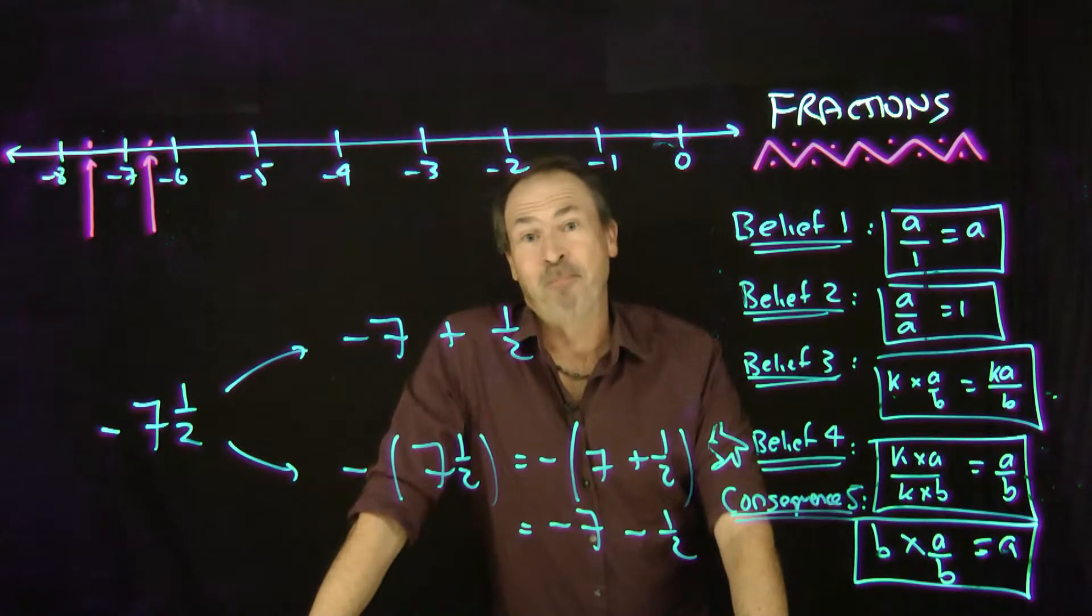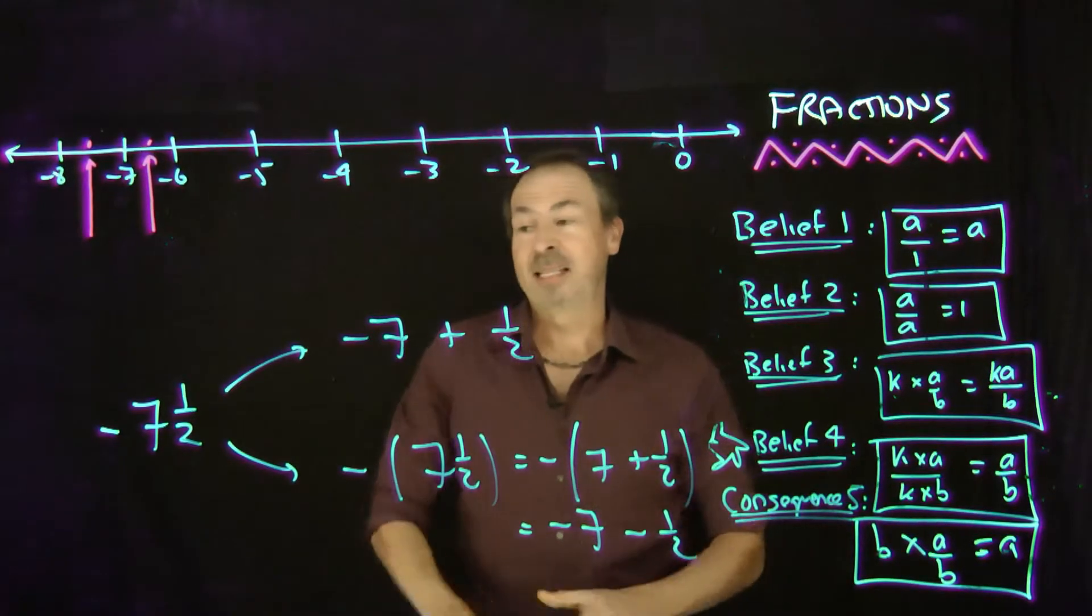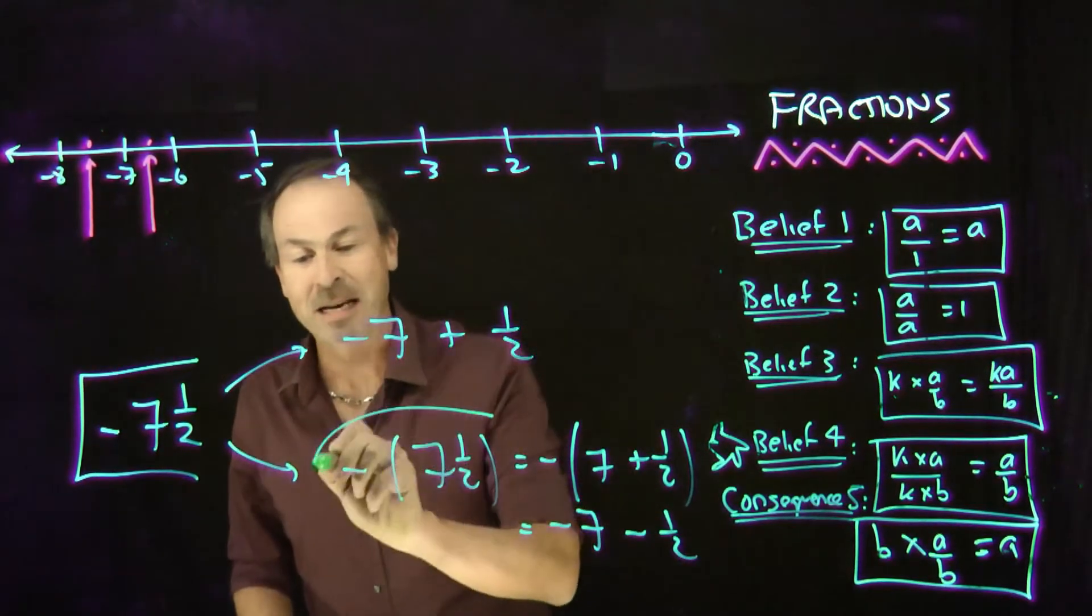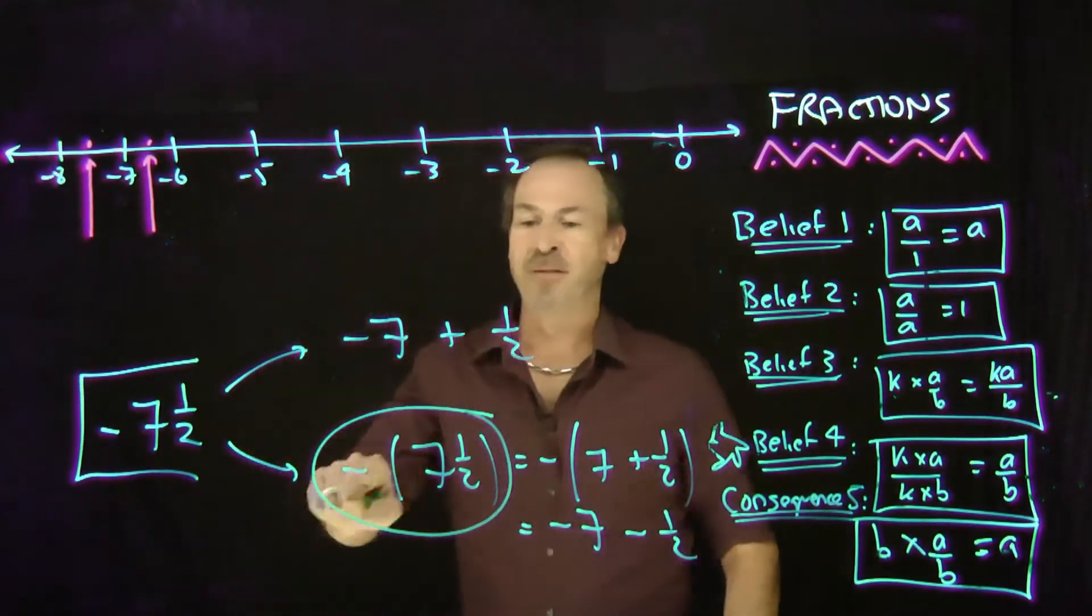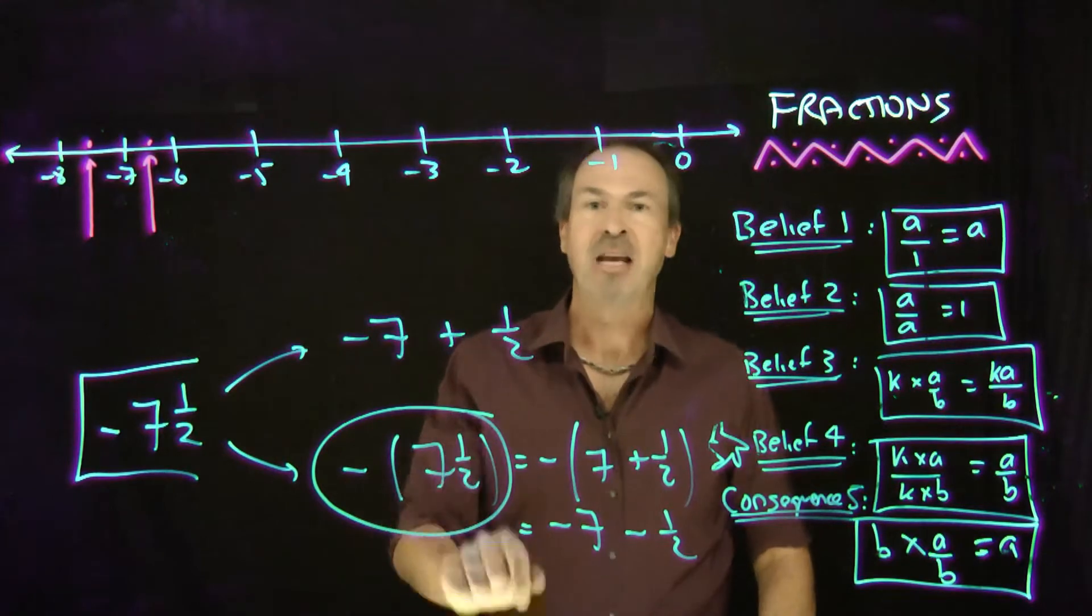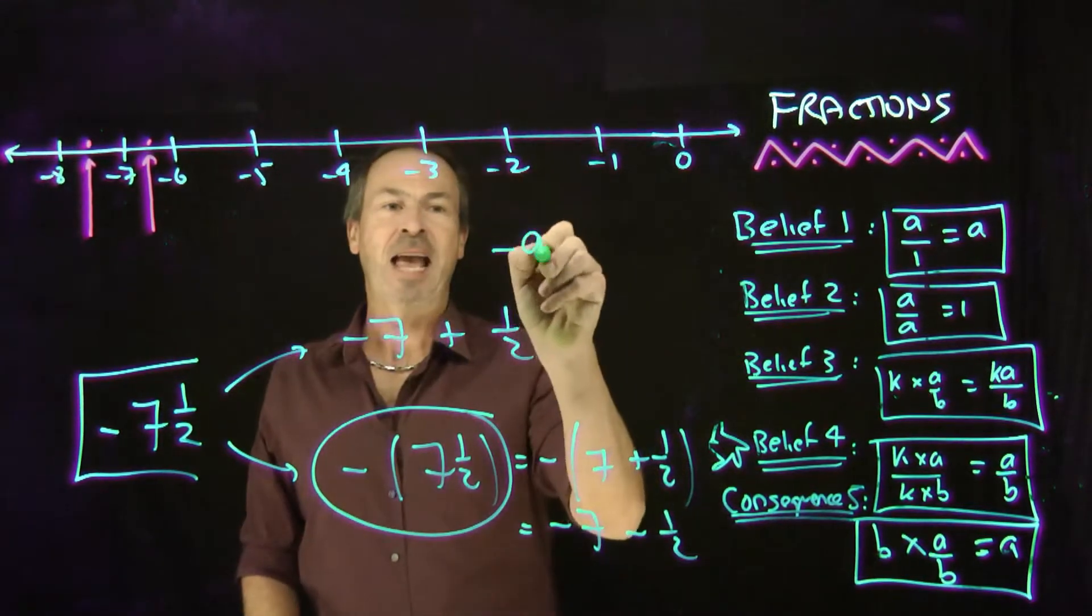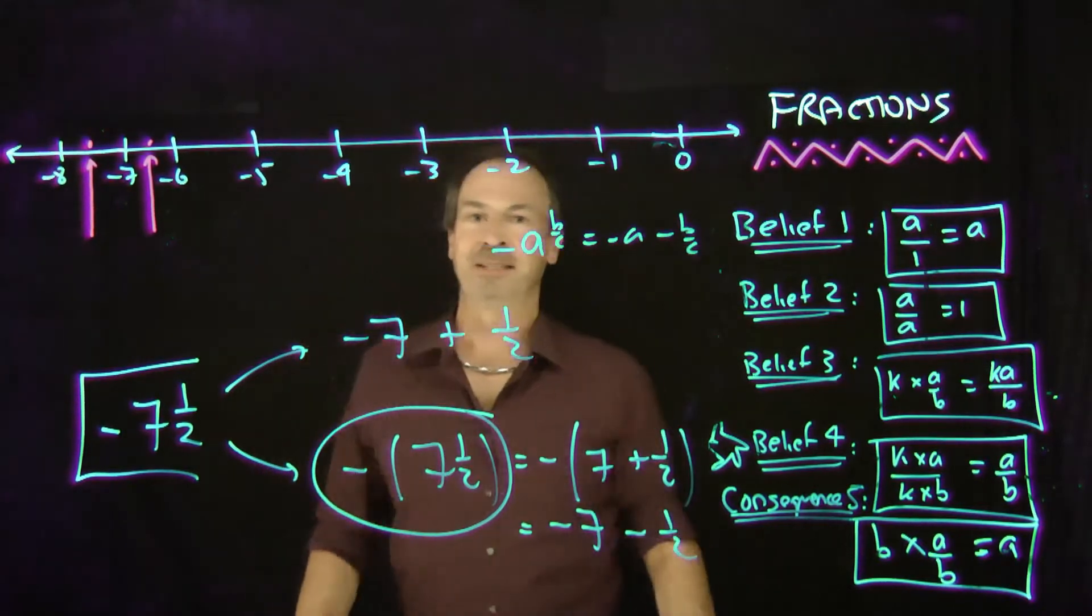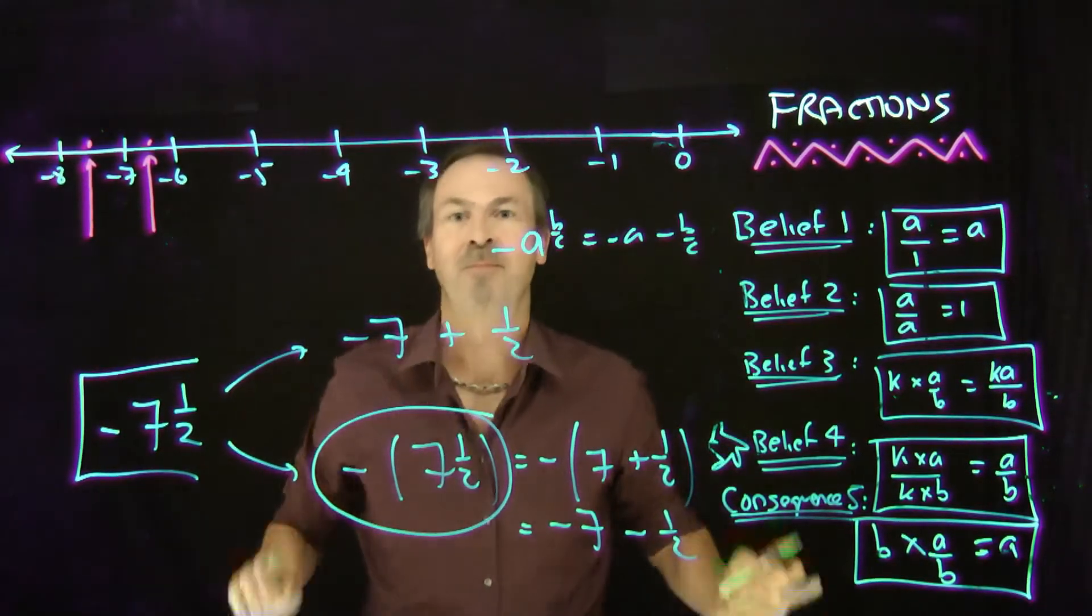Well I need to point something out. Society has made the choice. They say if you see something like negative 7 and a half, negative a mixed number, they actually mean this interpretation. The negative of the entire quantity, of the 7 and of the half. So negative a and b/c is actually negative a and negative b/c together. Societal choice.